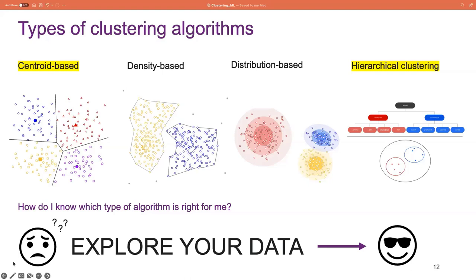First up, we have centroid-based clustering, which works by assigning each data point to a number of centroids to form groups or clusters. Algorithms like the k-means algorithm are efficient, effective, and pretty simple to implement, but they do have the downside of being sensitive to initial conditions and outliers. We also have density-based clustering, which works by separating high-density regions of data points from low-density areas. Unlike centroid-based clustering, there's no need to be sensitive about initial conditions — we don't have to pick the number of clusters beforehand. These algorithms also don't assign outliers to clusters, which is really helpful. But they struggle to perform well with data of varying densities and high dimensions.